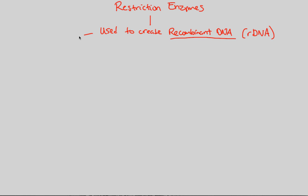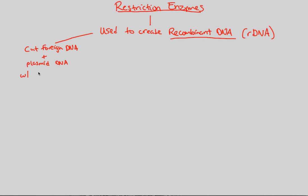What does this mean? What you're going to do, based on what we've already learned, is take some foreign DNA and cut it. Whenever we say cut DNA, we're always going to be using restriction enzymes. So we're going to cut foreign DNA and what we refer to as plasmid DNA. Plasmids are only found — or usually always found — in bacteria. We're going to cut them with the same exact restriction enzyme.